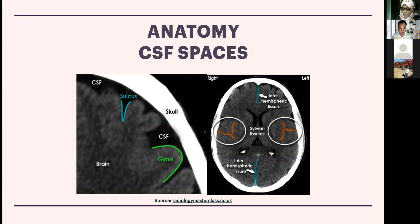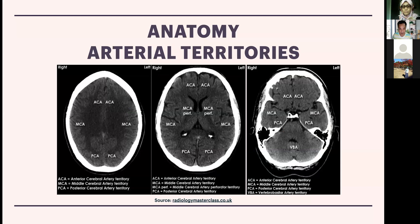For CSF spaces: within the CSF you have finger-like projections called gyri — singular gyrus — and between them are the indentations called sulci. This is important in stroke because stroke causes edema, which causes mass effect, which causes effacement of the sulci. Effacement of sulci is an indirect clue that something is wrong with the adjacent brain parenchyma.